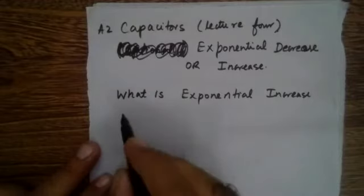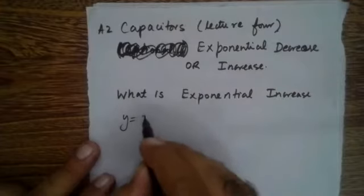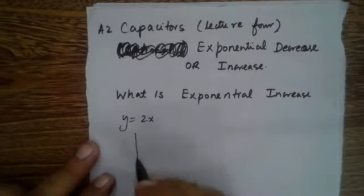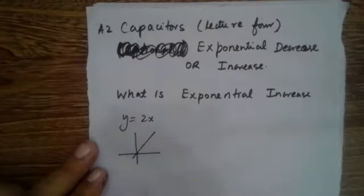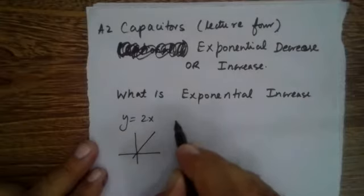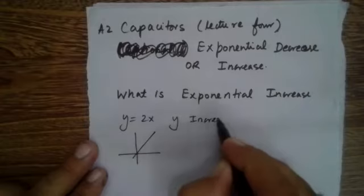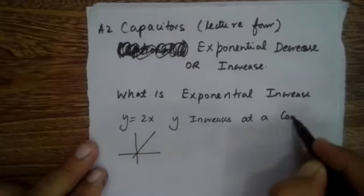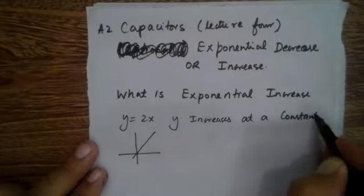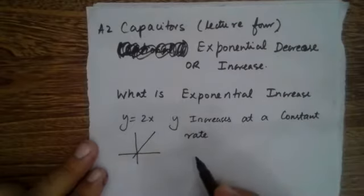Consider this expression: y is equal to 2x. Its graph is like this — y increases as x increases, but y increases at a constant rate with respect to x.